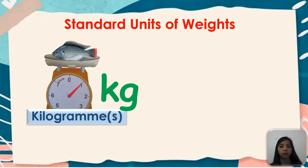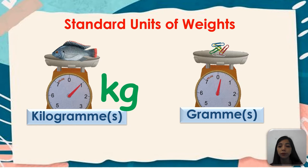The next one we have is gram. The symbol of gram is g. So always remember that one kilogram is equal to one thousand grams.